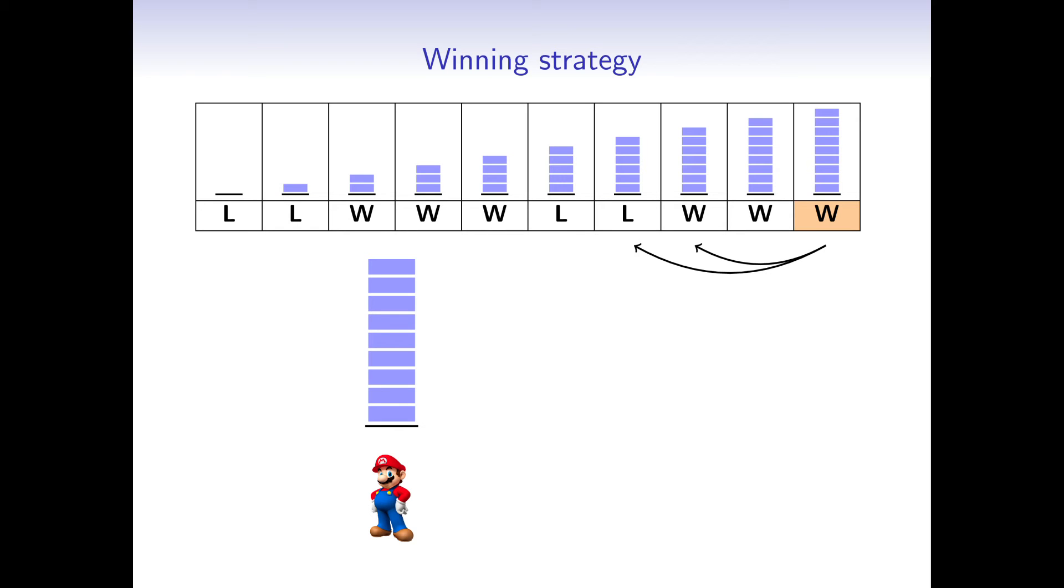He can either remove 2 or 3 piles. Since he wants Luigi to have a losing state, he removes 3 blocks. Now it's Luigi's turn. Since he is on a losing state, his move doesn't matter. Regardless of whether he removes 2 or 3 blocks, Mario ends up on a winning state. He removes 2.